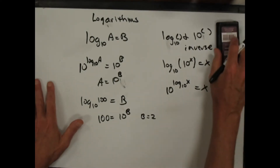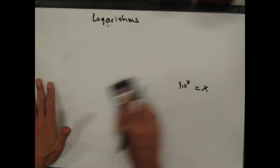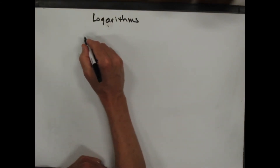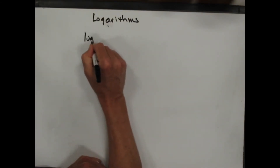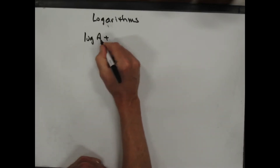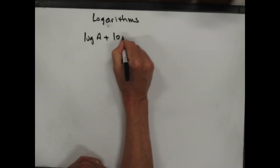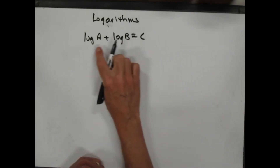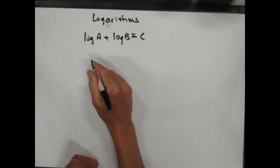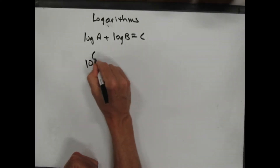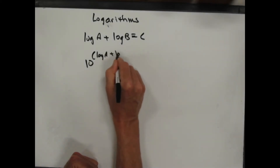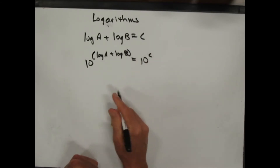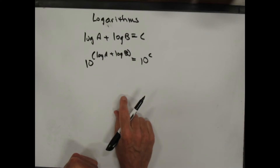So let me do an identity or two here. Suppose I have log of a — we'll assume base 10 — plus log of b equals c. I want to come up with an identity, a different way of writing this. So I'm just going to go through my routine. I'm going to say, 10 to the log a plus log b equals 10 to the c. I just raised both sides to 10.